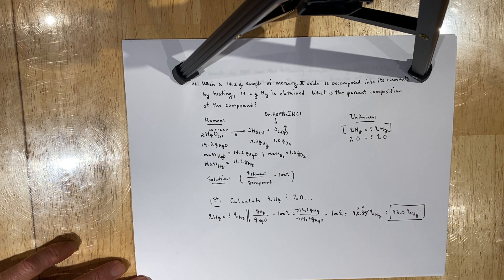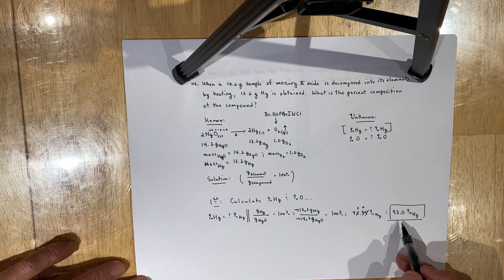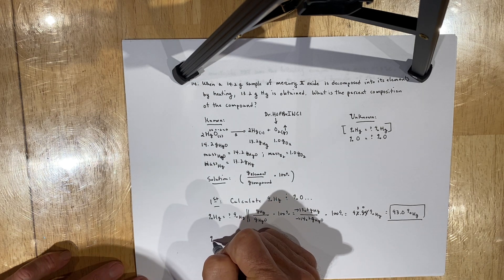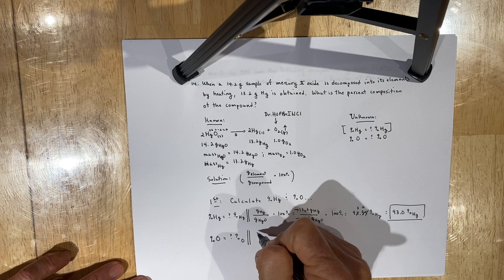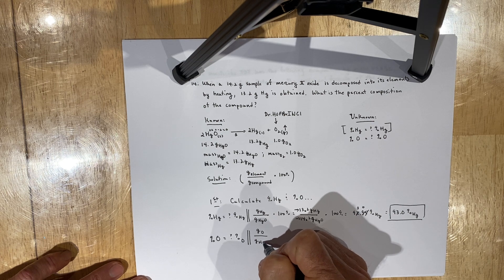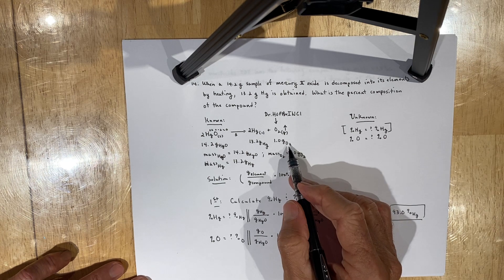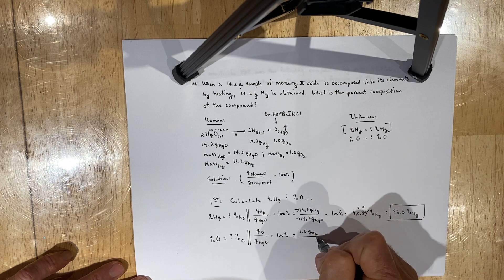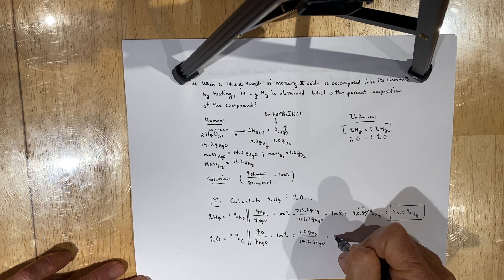Now, understanding percent as you do, you might surmise that 100% minus 93% means that the percentage of oxygen is in fact going to be 7%. But I want you to follow through on the calculation anyway because it's good practice. So you're looking for the percent of oxygen in units of percent oxygen. You're looking for the grams of oxygen divided by the grams of mercury oxide, mercury 2 oxide, times 100%. By default, the mass of O2 gas is 1.0 grams of O2. The mass of mercury oxide, once again, is 14.2 grams of HgO times 100%.